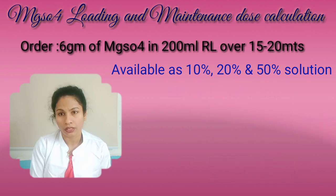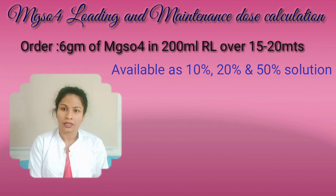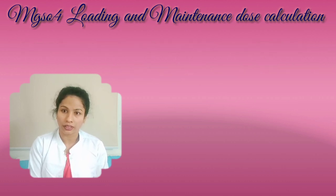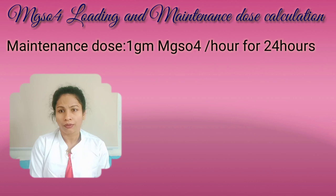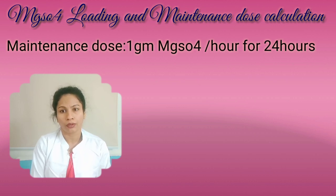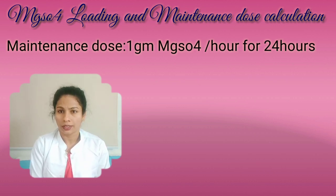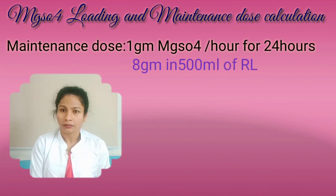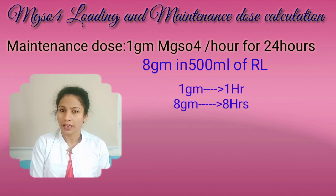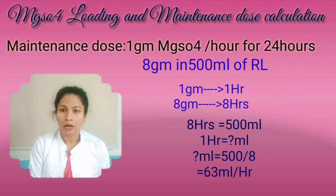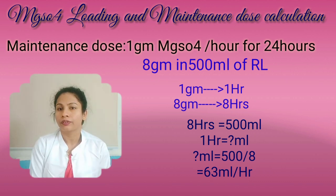The loading dose is 6 grams of magnesium sulphate in 200 ml of normal saline or RL over 15 to 20 minutes. Next, the maintenance dose: the order is 1 gram of magnesium sulphate per hour over 24 hours. For this, 8 grams of magnesium sulphate is added to 500 ml of solution — normal saline or RL — and it should run for 8 hours, delivering 1 gram per hour.